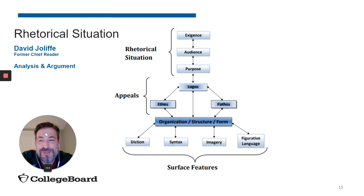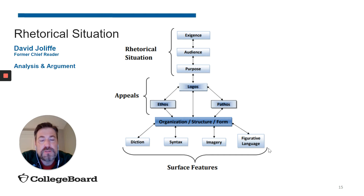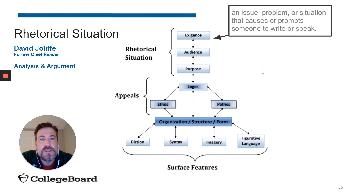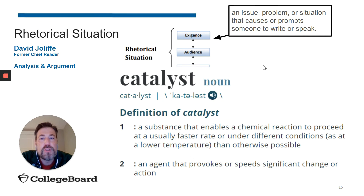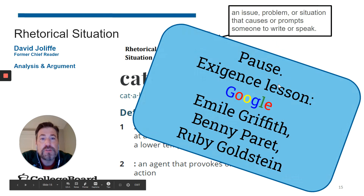You may have encountered David Joloff or have one of his textbooks in your class. This is his relatively recent chart of the rhetorical situation, all the way down to the surface features we look for. This new word exigence showed up in the CED and caused a lot of us to pause. Really, it's just an issue, problem, or situation that causes or prompts someone to write or speak. For years I've been using the word catalyst with my students instead of exigence — I'm now using both so they'll recognize the word on the exam. What is the catalyst to get them to write? Norman Mailer is the author of the passage you just read. But what caused him to write it? What was the catalyst — the agent that provokes or speeds significant change?